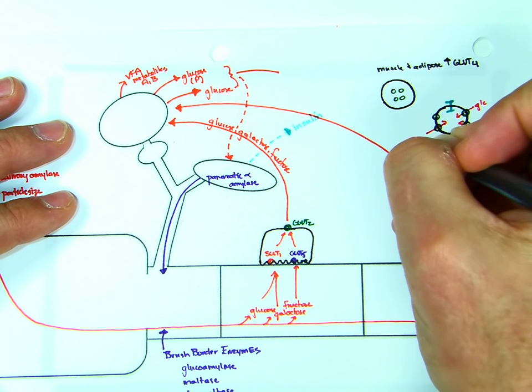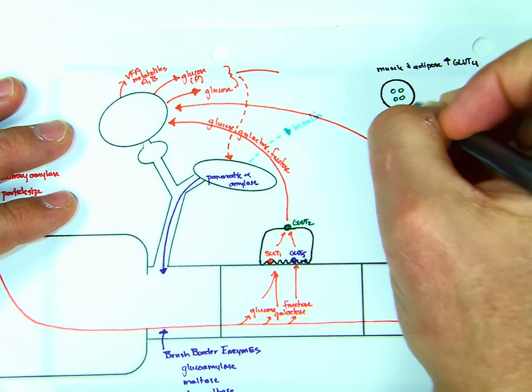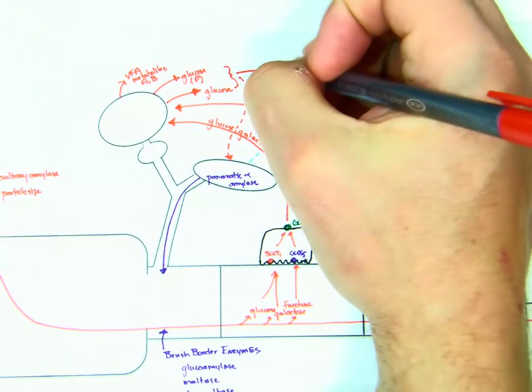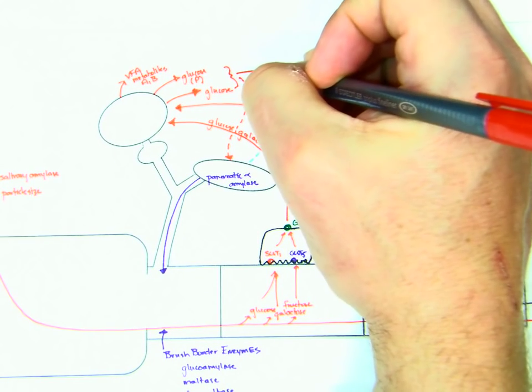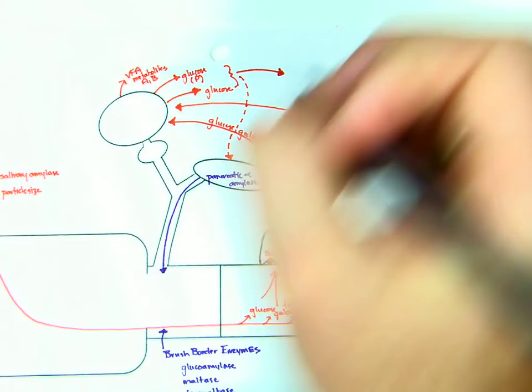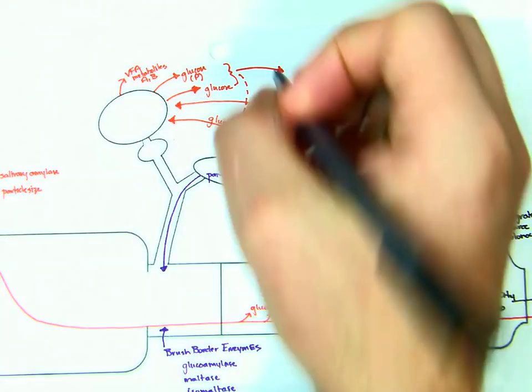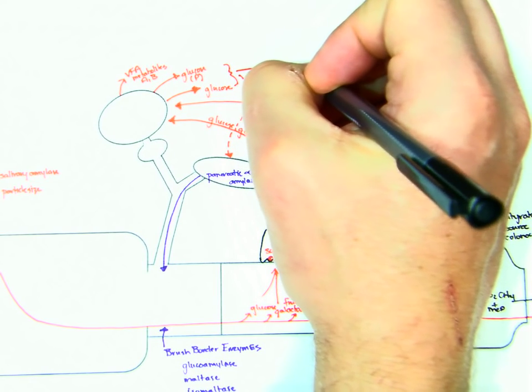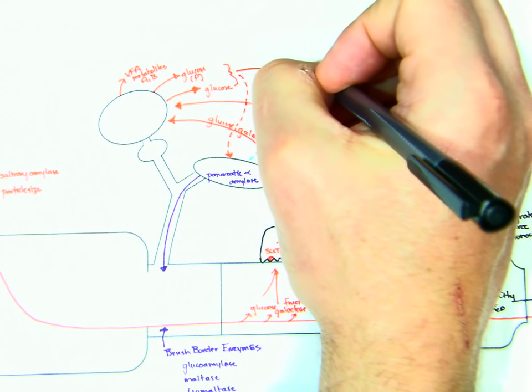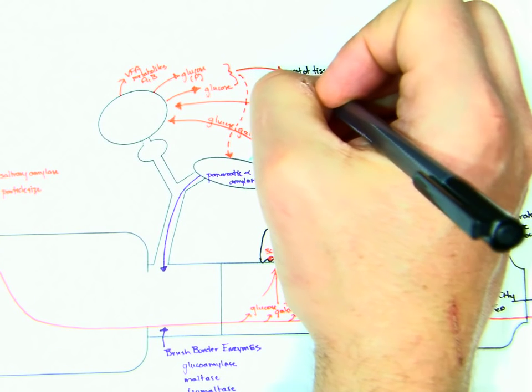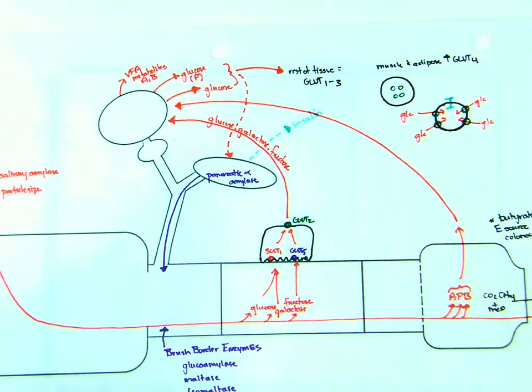And then we have the absorption of glucose. And in adipose cells, you can use it for fatty acid synthesis. And muscle, you can use it to synthesize glycogen, use it as a source of energy. So the glucose goes to the body. And so muscle and adipose, it's GLUT4 that we're going to use as receptors. The rest of the tissue, or transporters, the rest of tissue, equals GLUT1 through 3. So the transporters, for the rest of the tissue, will be GLUT1 through 3.